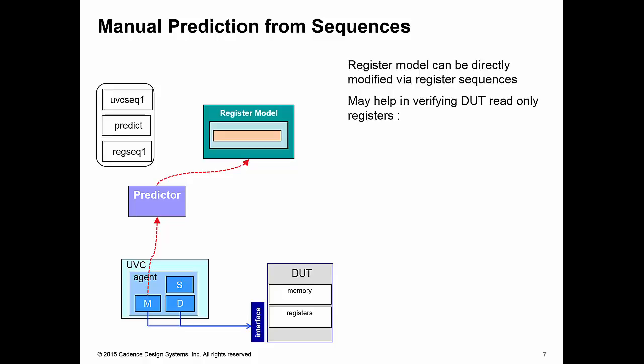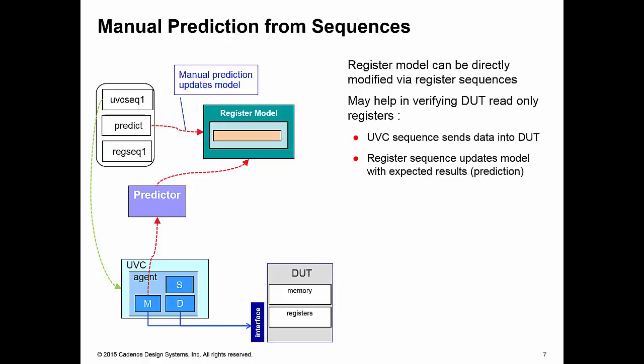So what we might be able to do is set a series of UVC sequences to send data into our DUT and then use the register model access methods to write the register model with the expected results, basically to do manual prediction on our register model. Then we can use register sequences to access the registers from the DUT and then check those against the expected results that we just wrote into the register model.